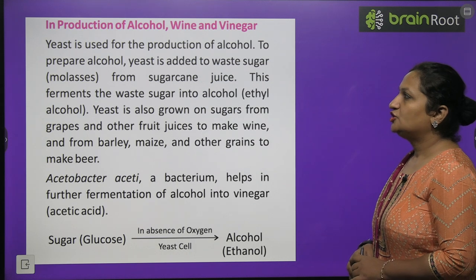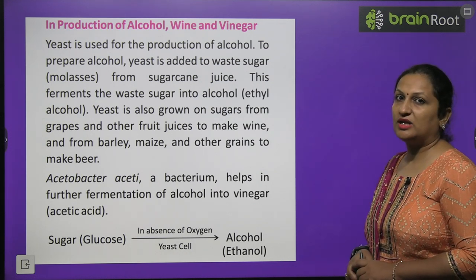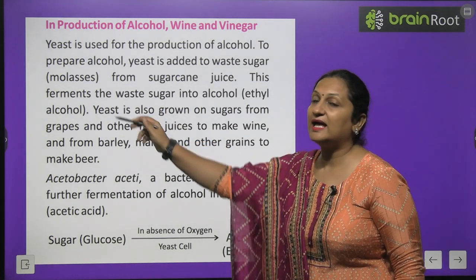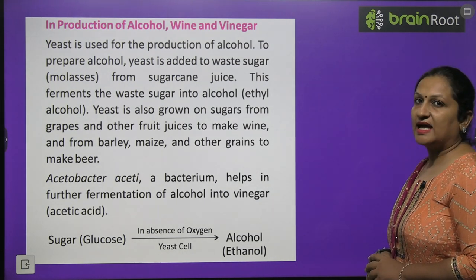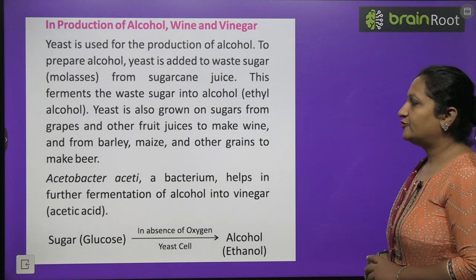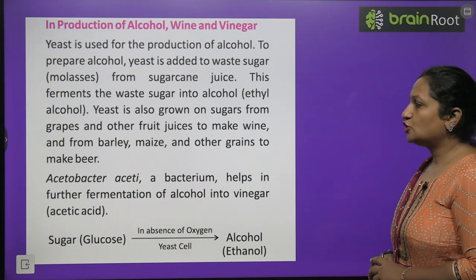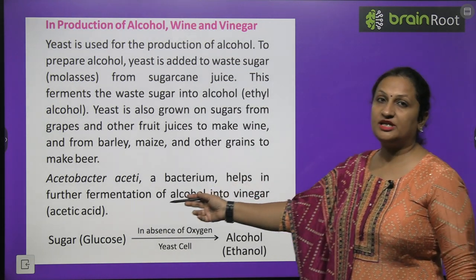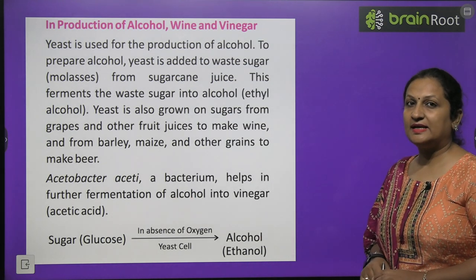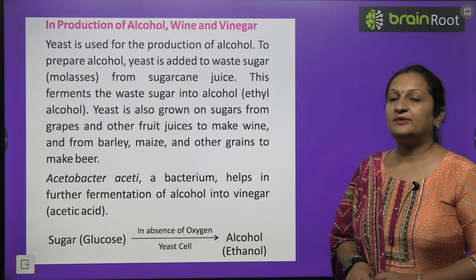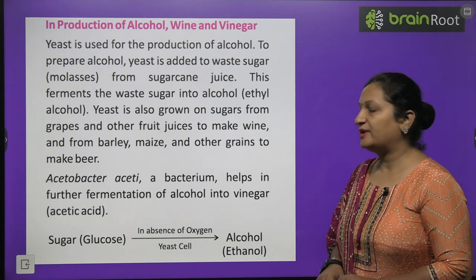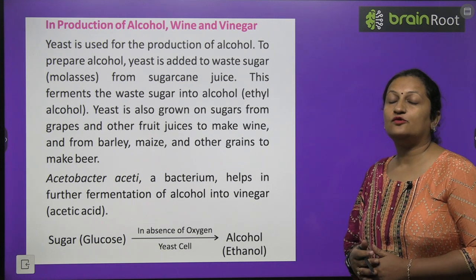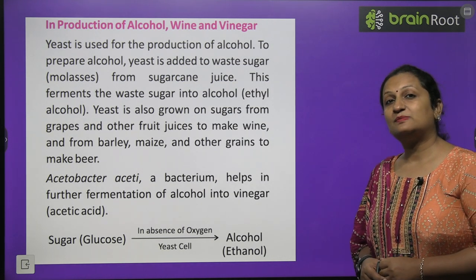Yeast is also used in the production of alcohol from sugar cane. Yeast is added to sugar cane juice and left for some time so that fermentation occurs, resulting in the formation of ethyl alcohol. To prepare alcohol, yeast is added to molasses — waste sugar from sugar cane juice — and this ferments the sugar into alcohol. Yeast is also grown on sugars from grapes and other fruit juices to make wine, and from barley, maize, and other grains to make beer. Acetobacter aceti is a bacterium that further ferments alcohol into vinegar, which is acetic acid — the IUPAC name for vinegar.